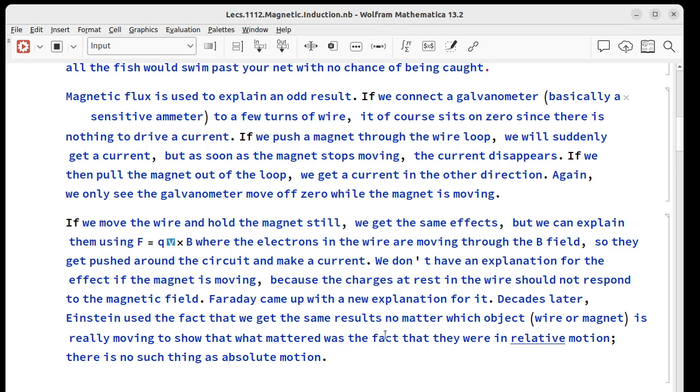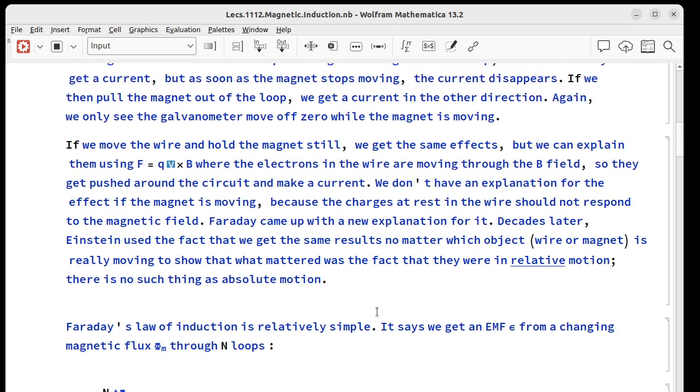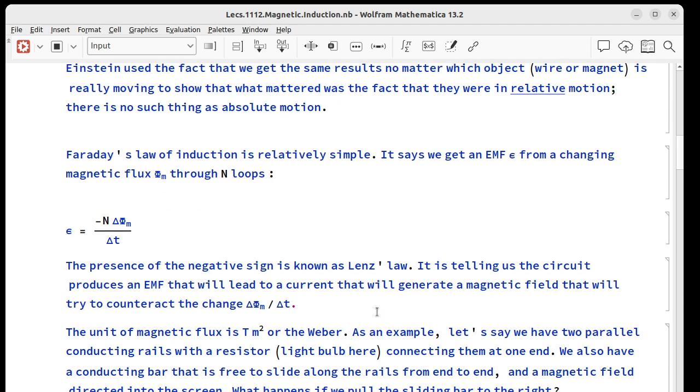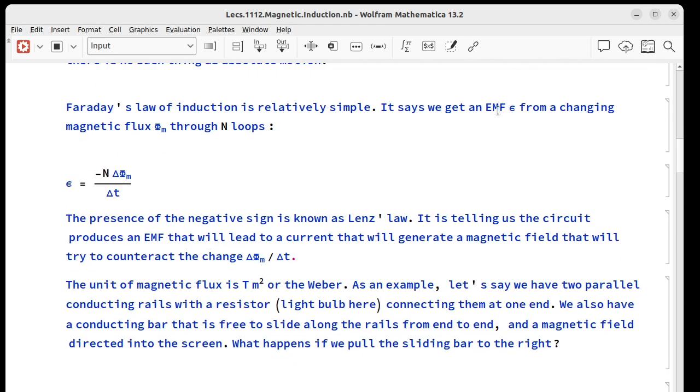That's where the relativity in theory of relativity comes from. There's no such thing as absolute motion. It's only motion measured relative to something else. That's all that's important. So if we look at Faraday's law of induction, the way he explains this, he says that we get an EMF ε, and remember this is like a battery voltage. It's something that will push charges around. We get this EMF from a changing magnetic flux φ, which looks like this if we have N loops: it's negative N change in phi over change in time.